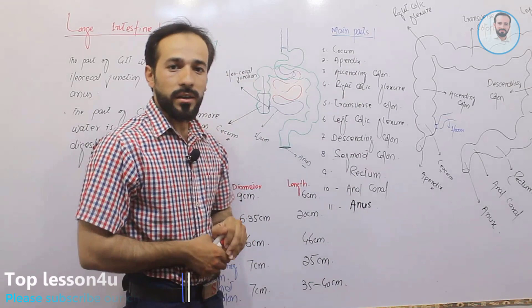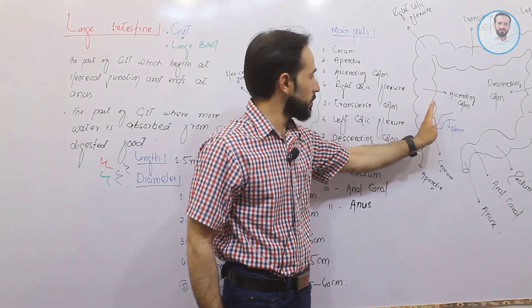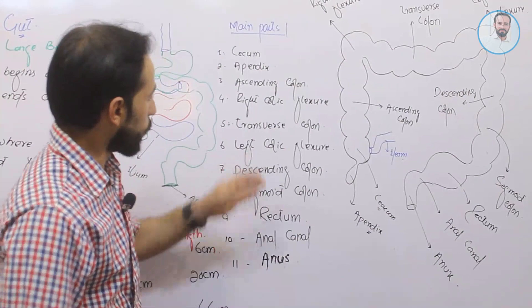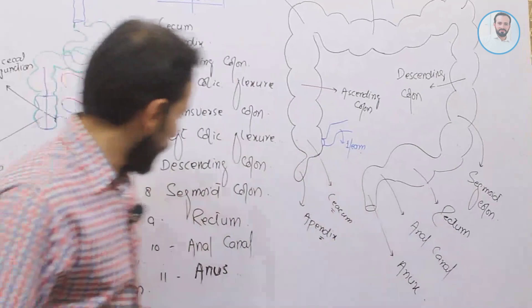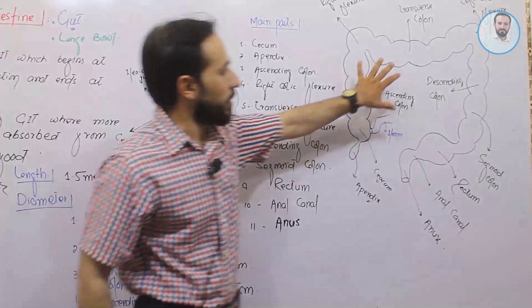To summarize the parts: the first part is the cecum, then the appendix which is a small projection of the cecum, then ascending colon going upward, then right colic flexure, transverse colon, left colic flexure, descending colon, sigmoid colon, rectum where feces are stored, anal canal, and finally the anus.